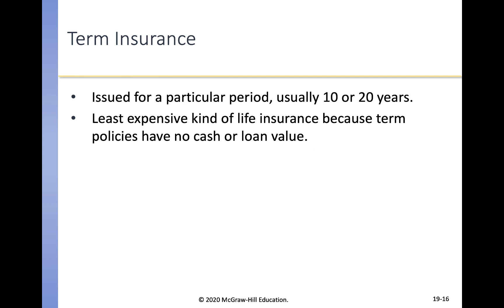Term insurance is issued for a particular period of time, usually 10 or 20 years, and is the least expensive kind of life insurance because it has no cash or loan value. If you pass away during the term, the policy pays out benefits. If you don't pass away and don't renew the policy, the insurance company will not pay when you do pass away. Many parents use term policies to provide for minor children — if the parent passes away while the child is a minor, the policy pays out to the guardian.